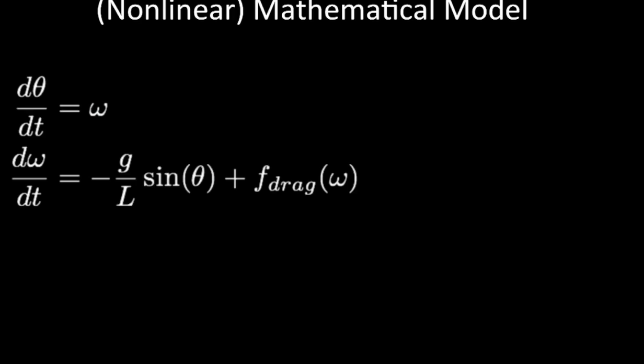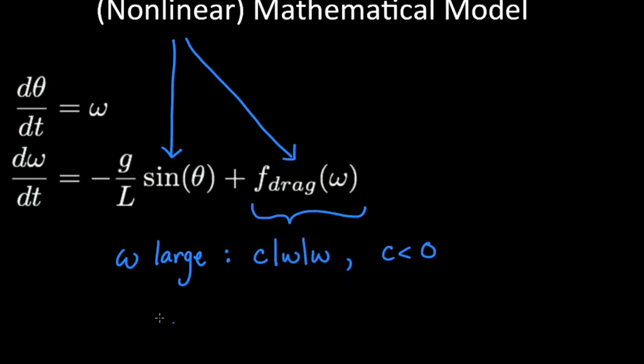The dynamics may be expressed as a coupled system of ordinary differential equations that describe how the angular displacement and angular velocity evolve over time. These equations are nonlinear due to the presence of sine theta and the drag function, f drag of omega. The drag function is quite complicated. For large omega, it is equal to c absolute value of omega, omega, where c is a negative constant. But for very small angular velocities near points on the trajectory where the pendulum is not moving, or at least not moving fast, the drag is given by b omega, where b is a negative constant.